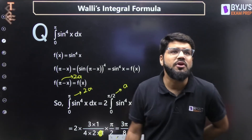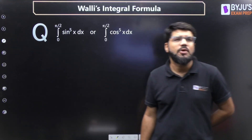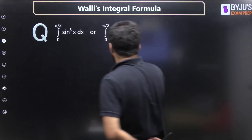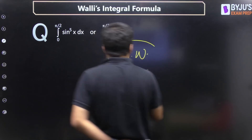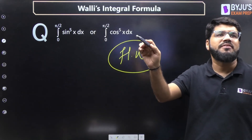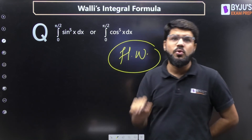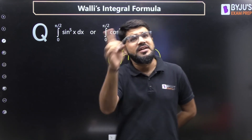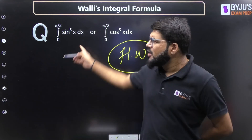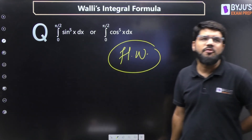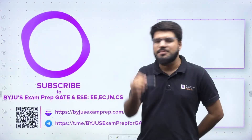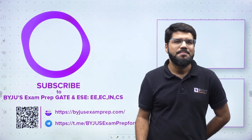If you enjoyed this, do mention in the comment box how you liked this Trichopedia. Also, here is a homework activity: find the integral of sin⁵(x) or cos⁵(x) for the limit 0 to π/2. Solve it within a few seconds using Walli's integral formula, and our team will revert on whether your answer is correct. Thank you, stay safe and take care, and stay subscribed to the Byju's Example YouTube channel.